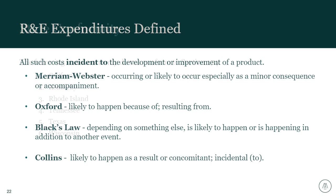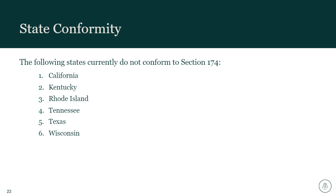This slide talks about states that don't conform to the new Section 174 capitalization rule. The capitalization and amortization of R&E expenses is required at the federal level, and most states require it as well. But as of March 11th, there are six states that don't conform. If you have a filing requirement in one of those states, there may be an adjustment from your federal taxable income to state taxable income.